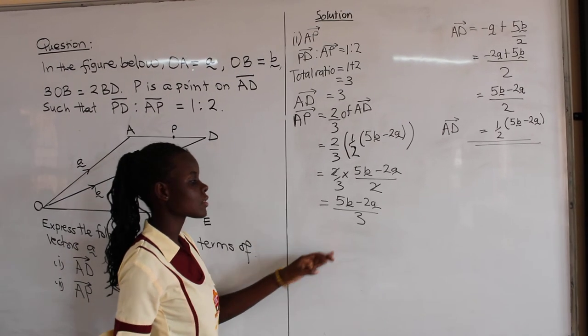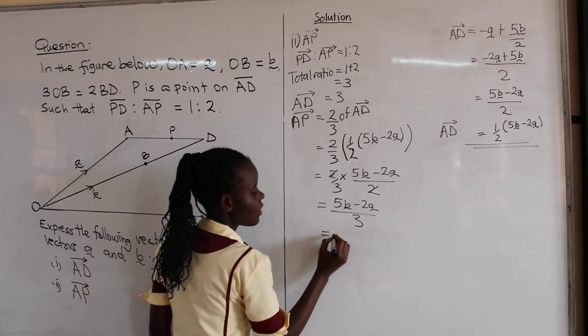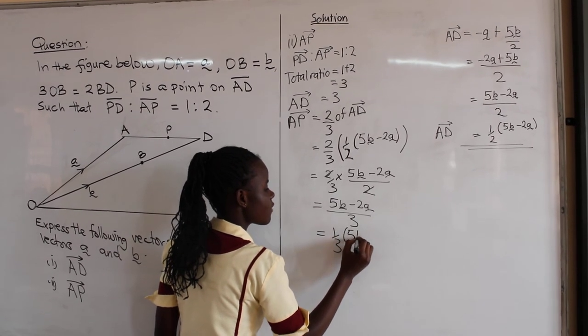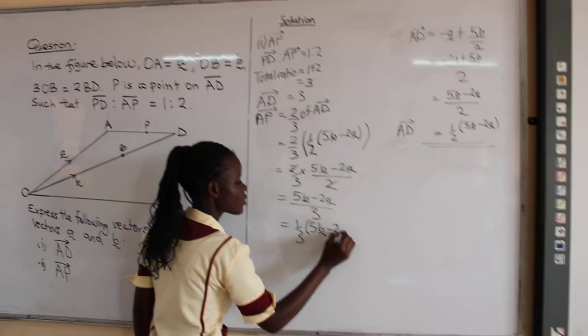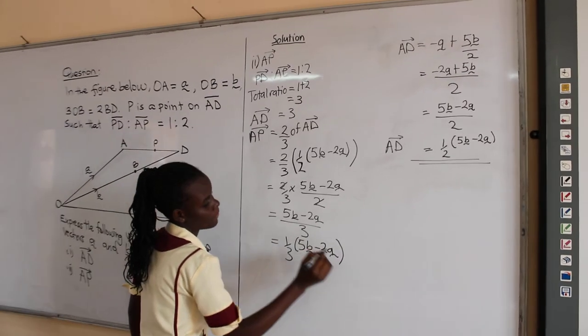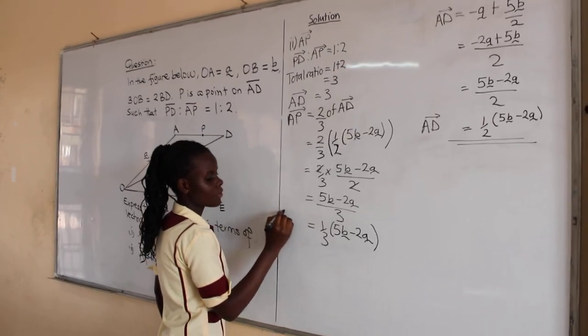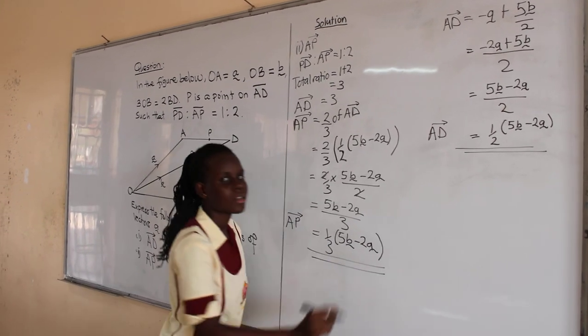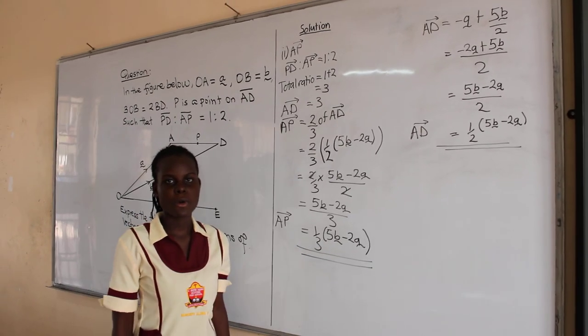But we have to get the right term. So we shall say a third into 5B minus 2A. And this will be our value of AP. Thank you.